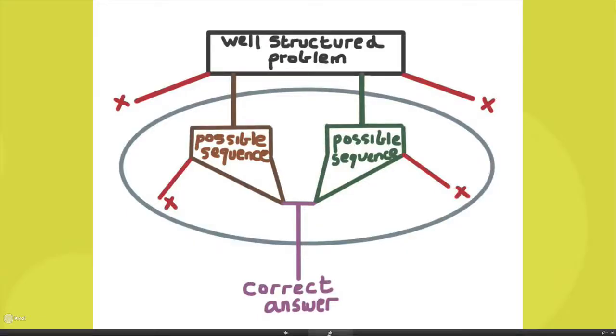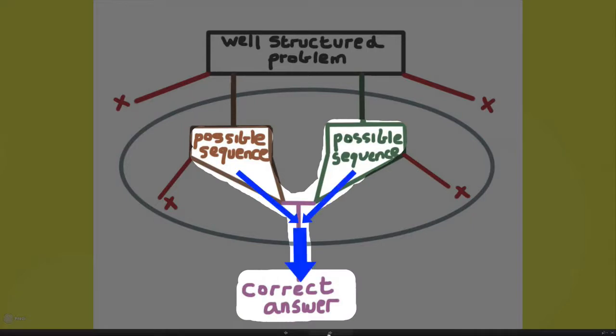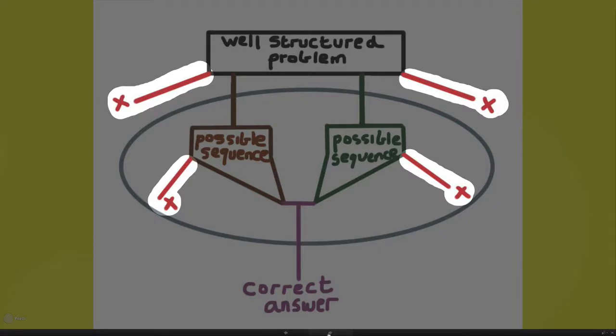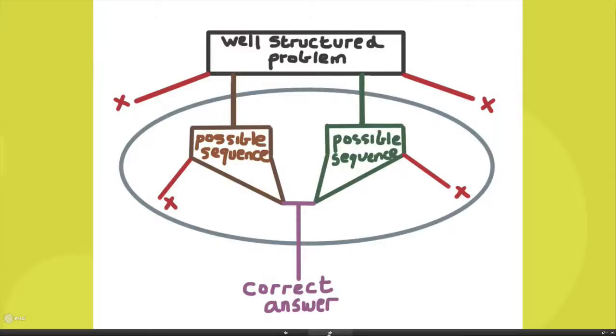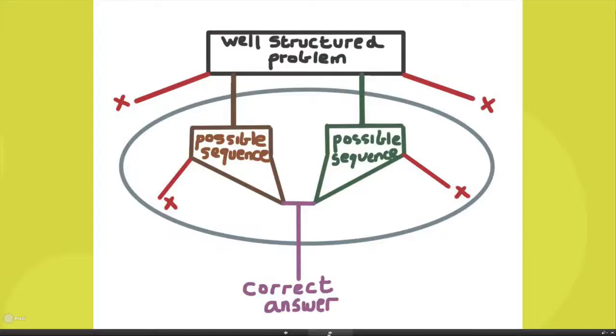But what happens in the Japanese lesson is that they present the learners with the well-structured problem and they also present the learners with the correct answer. But the science experiment that they're working with has a number of possible ways of actually working through itself. There's a number of possible sequences. Now any one of these possible sequences could result in the correct answer, and what the teacher does is then works with the children through the possible sequences. And a number of the sequences could be right, but there also are issues where there's a number of wrong steps which could be made.